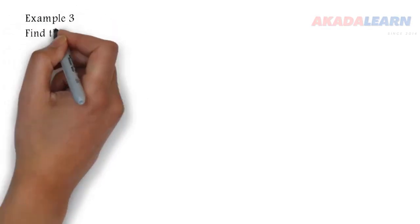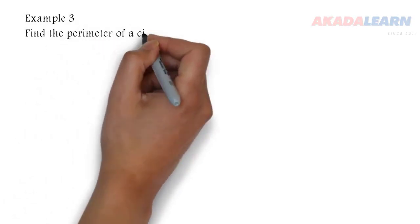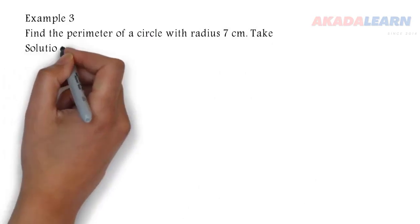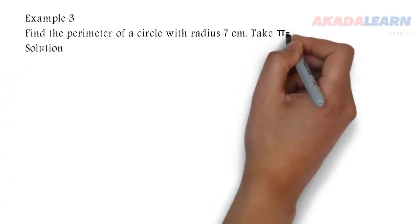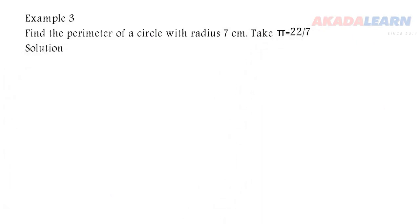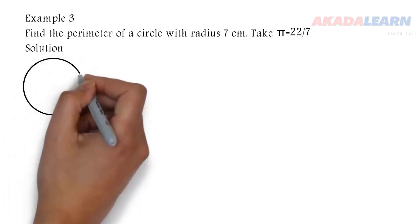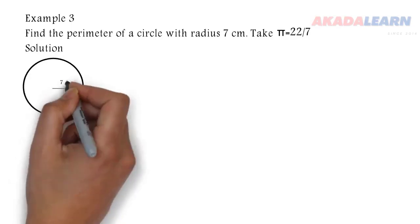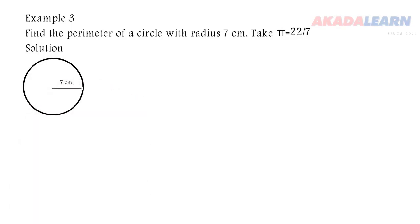Let's see another example, Example 3. Find the perimeter of a circle with radius 7 centimeters, and we are taking π to be 22 over 7. Let's draw our circle. The distance from the center of the circle touching any point on the circle is called the radius, and it's given to us as 7 centimeters.